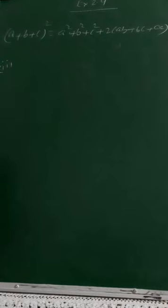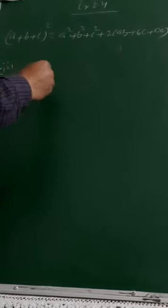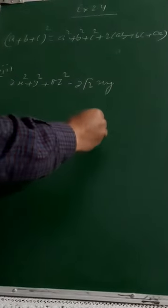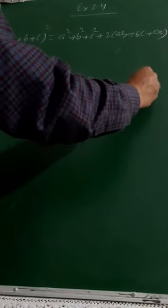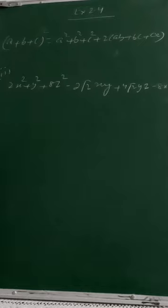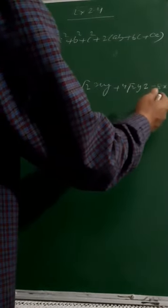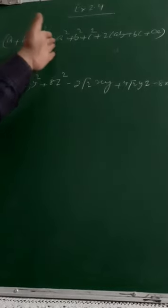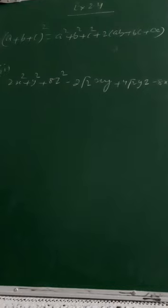I hope you are clear with this concept of applying this identity either in expanding or in factorization. Today I am taking the factorization of question number 5 second part again. That is, you need to factorize 2x²+y²+8z²-2√2·xy+4√2·yz-8xz. This expression lies on the form a²+b²+c²+2ab+2bc+2ca, so I need to identify those perfect squares.